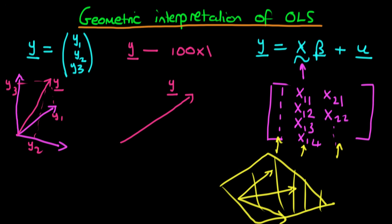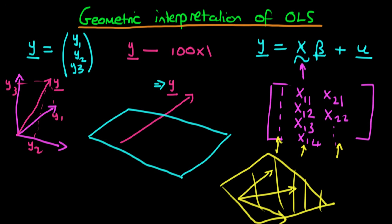When we think about it like that, we can think about what the purpose of ordinary least squares is. What we're trying to do in OLS is get as close to the dependent variable vector y as possible, given that we don't have a space which is as highly dimensional as the dependent variable. So we're trying to get close to y, even though we aren't able to exactly get there.